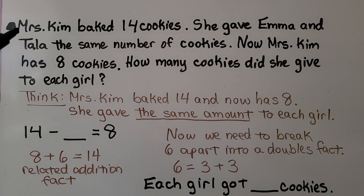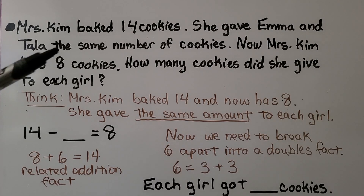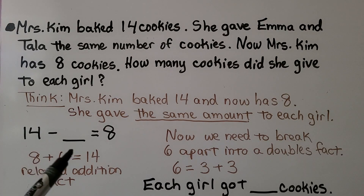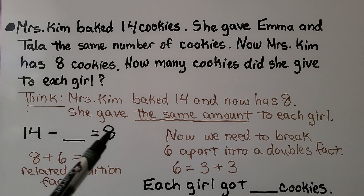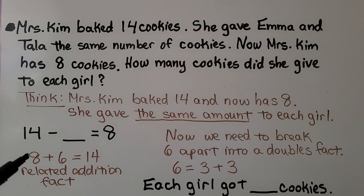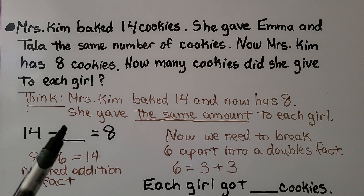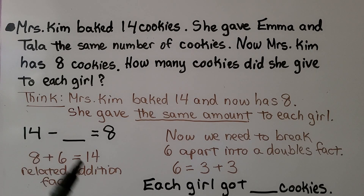Mrs. Kim baked 14 cookies. She gave Emma and Tala the same number of cookies. Now Mrs. Kim has 8 cookies. How many cookies did she give to each girl? Mrs. Kim baked 14 and now has 8. She gave the same amount to each girl. 14 minus some amount equals 8. We can think of the related addition fact: 8 plus 6 is equal to 14 — it's our fact family. The missing number is 6, so she gave away 6.